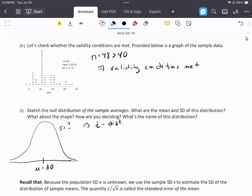Now, I know that mu is 30. I need to find my standard deviation, but I don't have sigma. So I'm going to do S divided by the square root of n. This is 17.19 divided by the square root of 48, and we get 2.481.